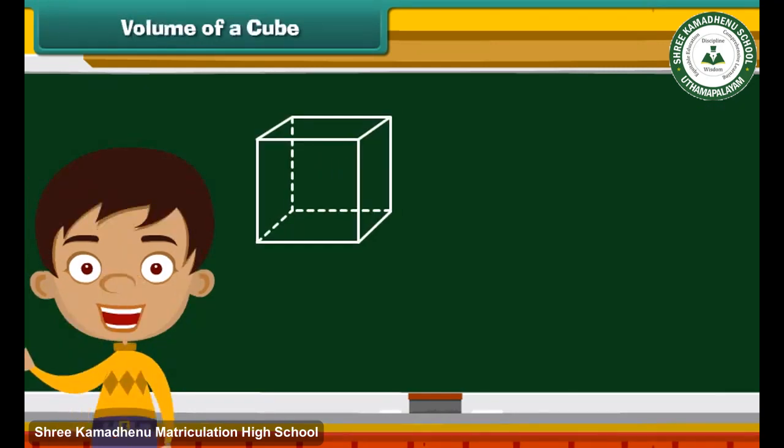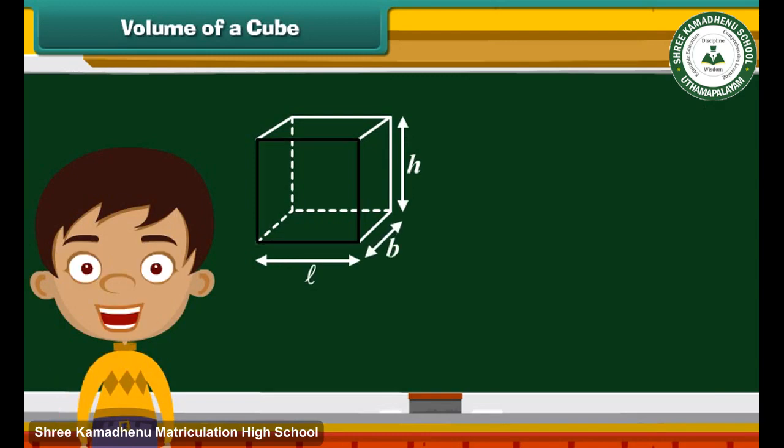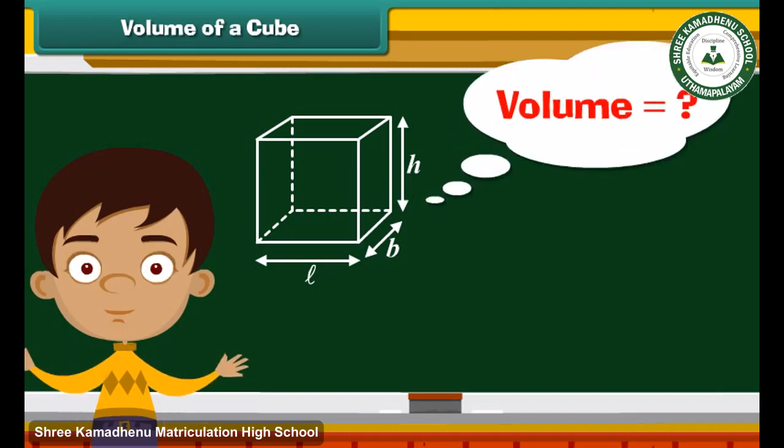See, this is a cube having three dimensions: length, height and width. It is like an empty box and has six equal square sides of the same size. How will you measure its volume?